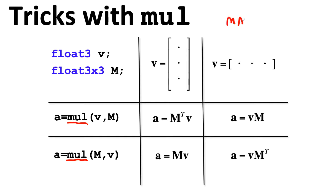Although in MATLAB you'll quite often see people write V followed by a single quote to do the transpose operation, you just don't see that in shader code. That takes a little bit of time to get used to.